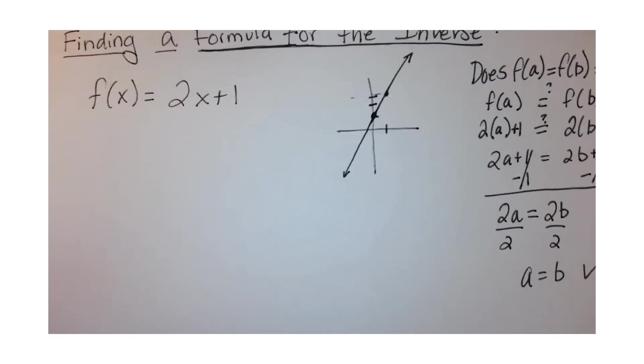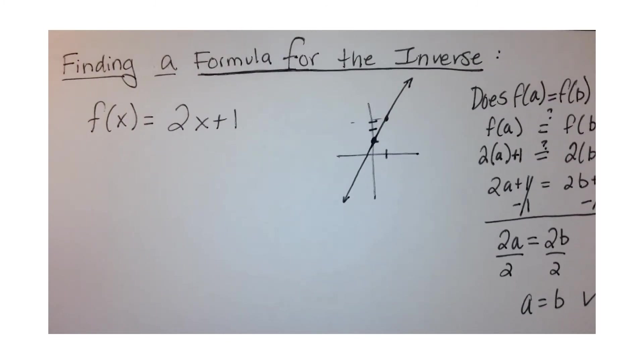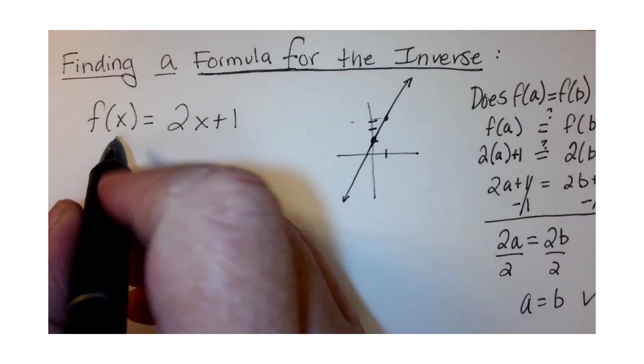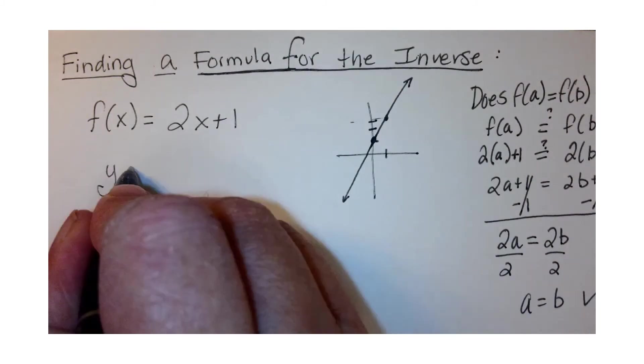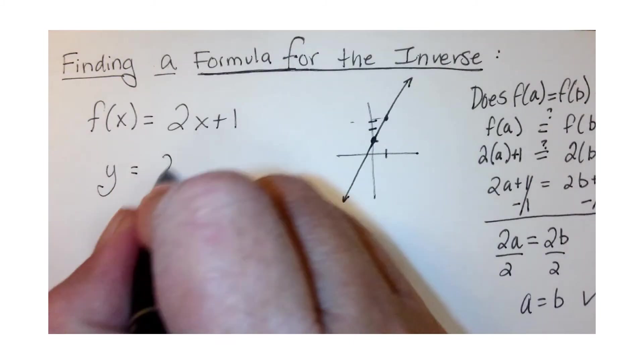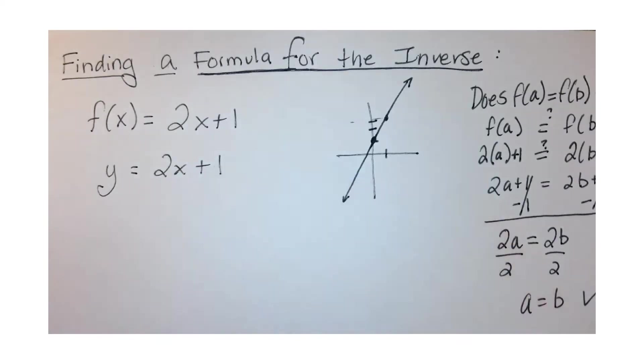Now that we know it's one-to-one, we can actually find the formula for the inverse. We're going to do that in a few different steps. Our first step is to take f(x) and call it y, so we have y = 2x + 1.